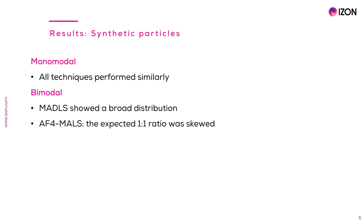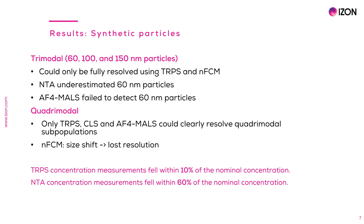For AF4 MALS, the expected 1-to-1 ratio of 100 and 200 nanometre particles was skewed. A trimodal mixture containing equal parts of 60, 100, and 150 nanometre particles could only be fully resolved using TRPS and nanoflow cytometry. For this particular trimodal mixture, NTA massively underestimated the proportion of 60 nanometre particles. Instead of confirming a 1-to-1-to-1 ratio — with each particle size comprising 33.3 per cent of the population — NTA underestimated the proportion of 60 nanometre particles to be only 2 to 5 per cent, and this happened on multiple occasions. Meanwhile, AF4 MALS completely failed to detect the 60 nanometre particles.